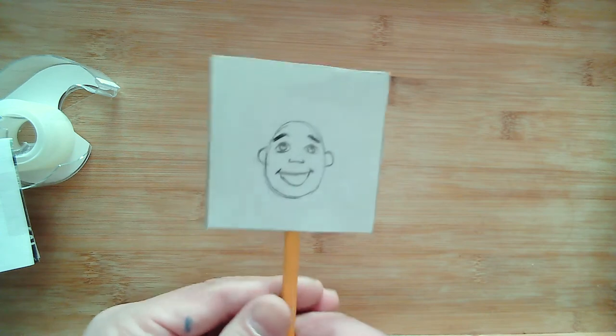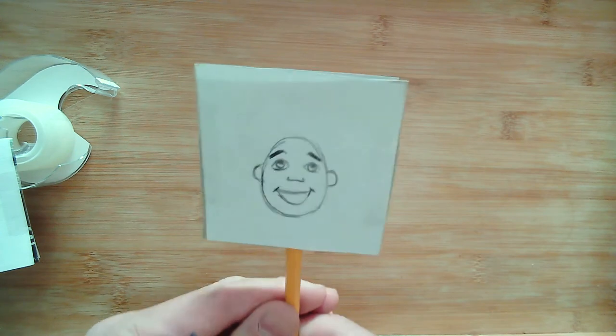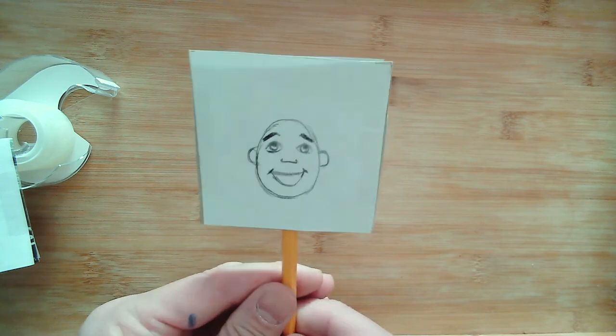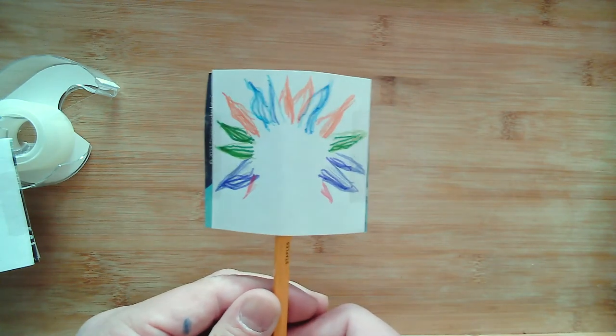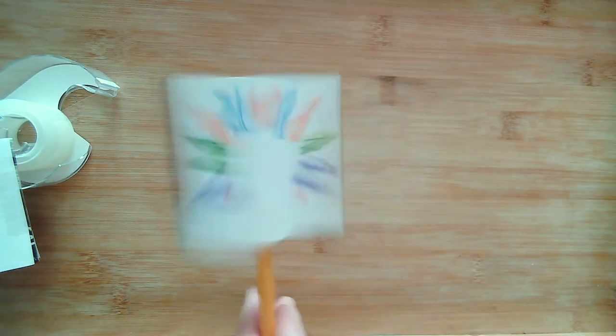So this is the Thaumatrope I showed you earlier. Here I actually drew a little self-portrait. That's me. But I have no hair, so I wanted to draw a crazy hairstyle. So I'm going to combine these two. And once I start spinning this around, you can play around with the speed at which you spin this around.